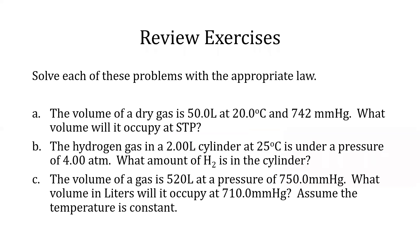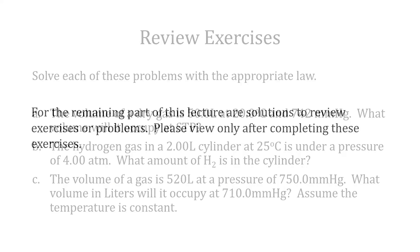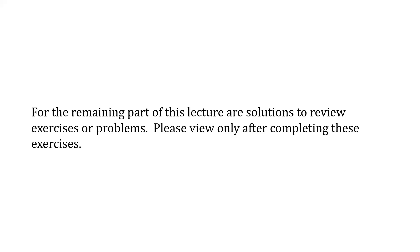Here are some review exercises for you to work on. Solve each problem with the appropriate law. A) The volume of a dry gas is 50 L at 20 degrees Celsius and 742 mmHg — what volume will it occupy at STP? B) Hydrogen gas in a 2-liter cylinder at 25 degrees Celsius is under a pressure of 4 atm — what amount of H2 is in the cylinder? C) The volume of a gas is 520 L at 750 mmHg — what volume will it occupy at 710 mmHg, assuming constant temperature? Solutions are provided in the remaining portion of this lecture; please view only after completing the exercises.